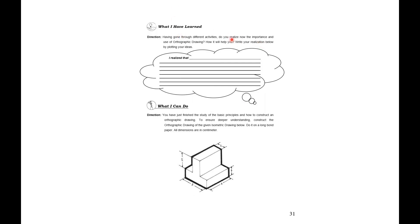For what I have learned, write the importance and use of orthographic drawing and how it will help you. Write your realization below by plotting your ideas. For what I can do, to ensure deeper understanding, construct the orthographic drawing of the given isometric drawing in a long bond paper. All dimensions are in centimeters. You will draw the front view, top view, and side view of this object given this measurement.